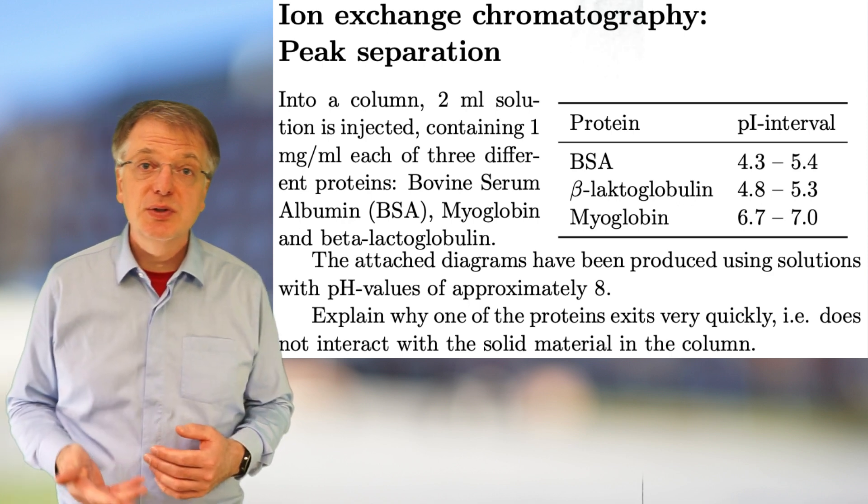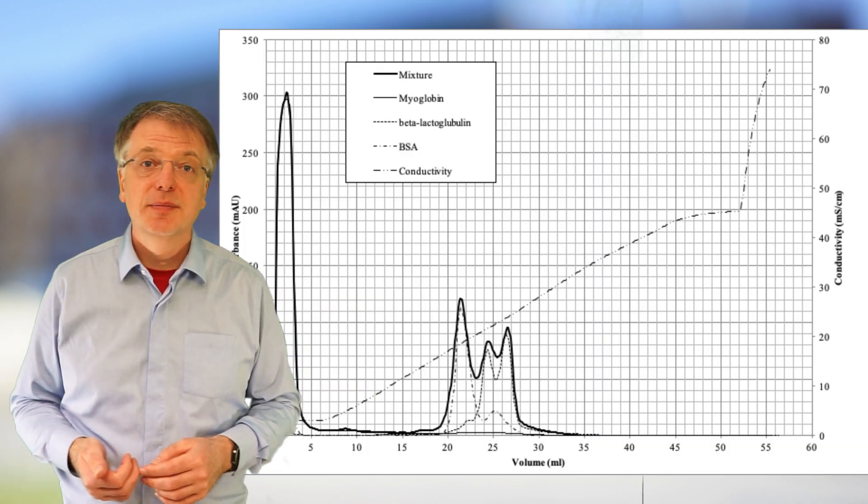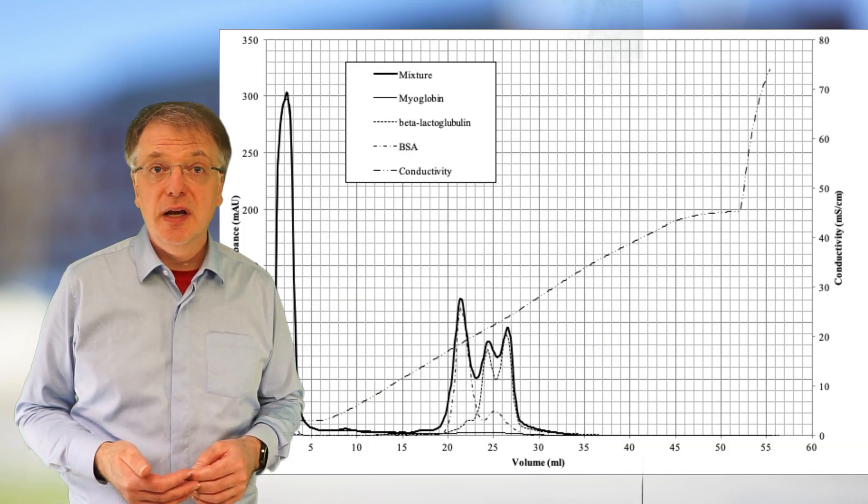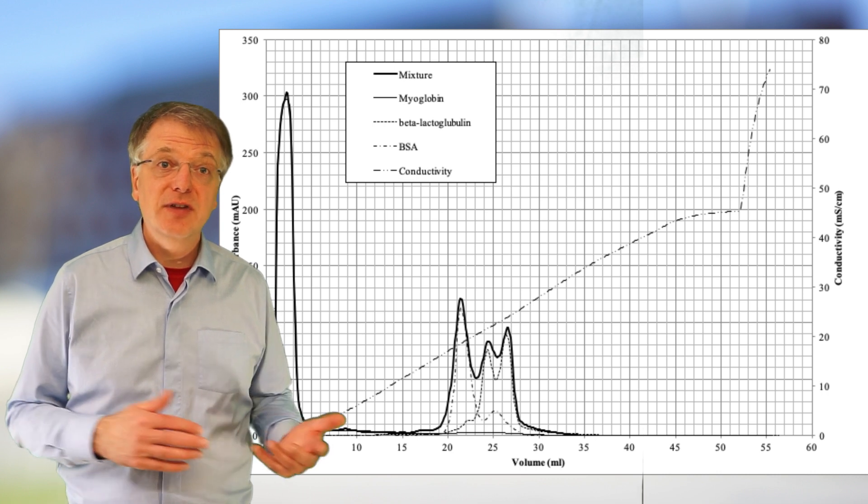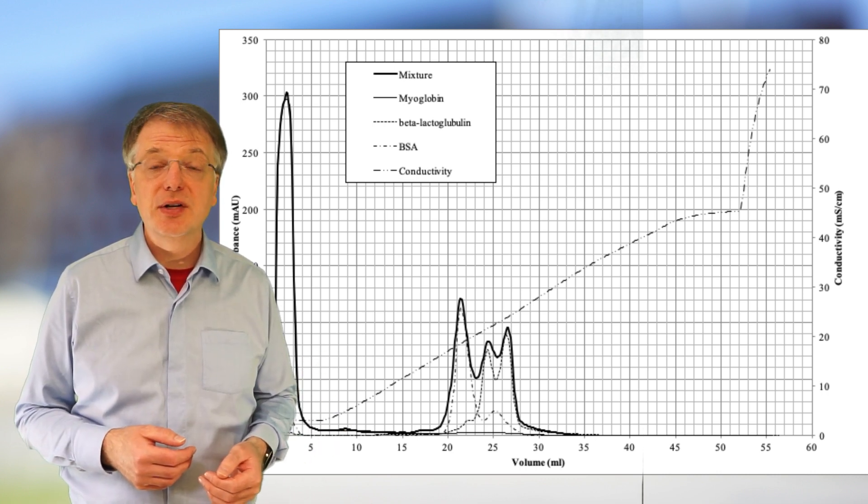Using solutions with pH values of approximately 8 produces this chromatogram. And your task is to explain why one of the proteins exits very quickly, that is does not interact much with the solid material in the column.